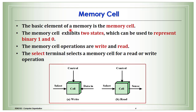The basic element of a memory is the memory cell, which can store either zero or one — it is one bit. The memory cell operations are write and read. To write to a memory cell, we select the cell then write the data. To read from the cell, we select the cell then sense or read the data stored in it.